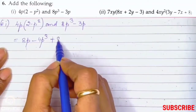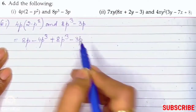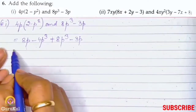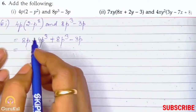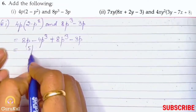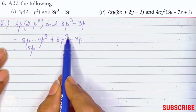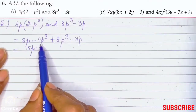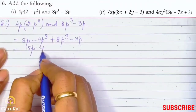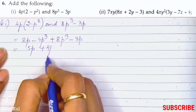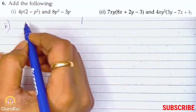Plus 8p³ minus 3p. So 8p minus 3p gives us 5p. Then again 8p³ minus 4p³ gives us plus 4p³. Now the second part of question number 6.